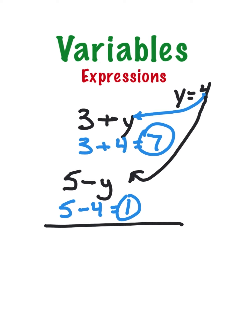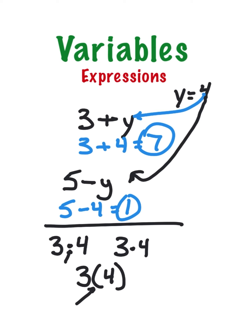One important notation rule: a raised dot between numbers means multiplication. We try to avoid using the x symbol for multiplication because x is a variable, so we use a dot instead. Another way to show multiplication: if there is no space between two things — like 3(4) with a parenthesis and no space — that means multiply. Similarly, three y with no space between them means multiply.